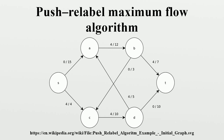After a push or relabel operation, H remains a valid height function with respect to F. For a push operation on an admissible edge, it may add an edge to GF where H equals H minus 1, or remove an edge from GF, effectively removing the constraint. To see that a relabel operation on vertex U preserves the validity of H: for the out-edges of U in GF this is trivially guaranteed by definition, and for the in-edges of U in GF the increased H can only satisfy the constraints less tightly, not violate them.